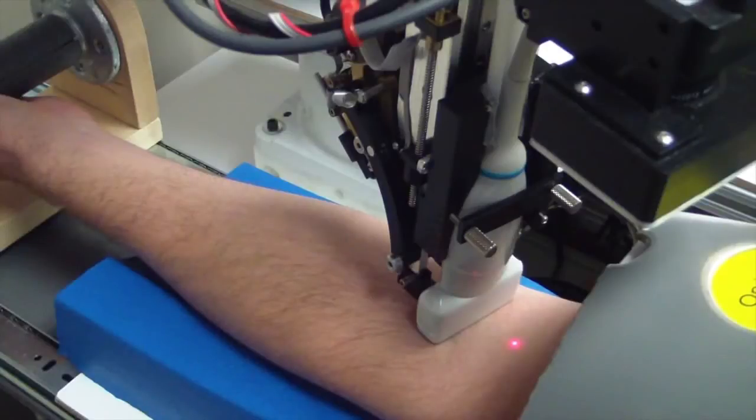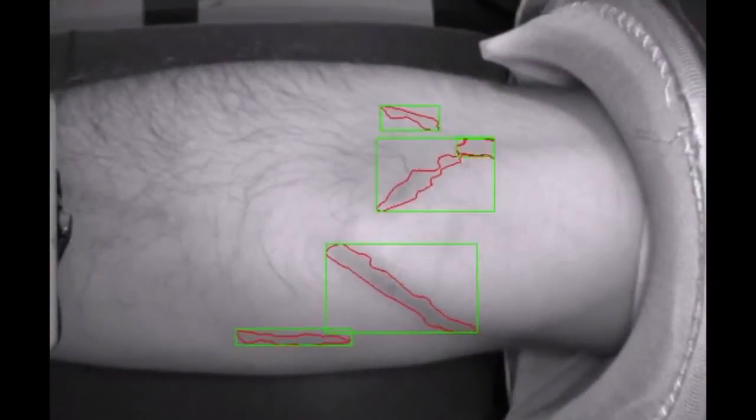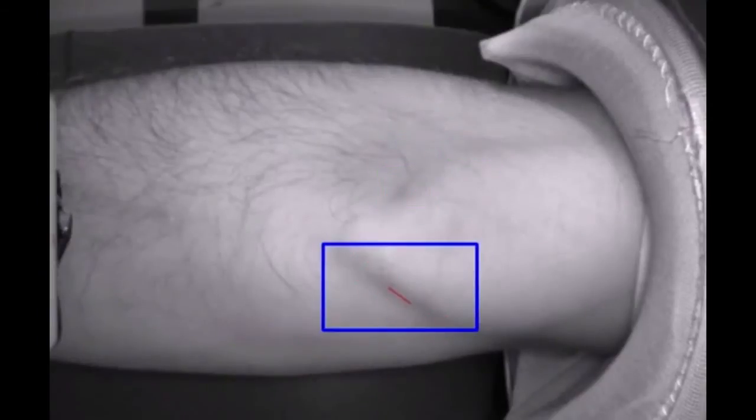After the patient puts his arm through the archway, an infrared light illuminates his inner elbow for a camera. Software matches what the camera sees against a model built from thousands of vein images, looking for a suitable vein.